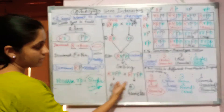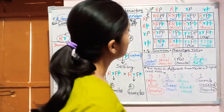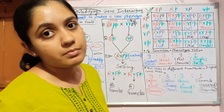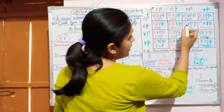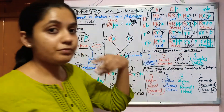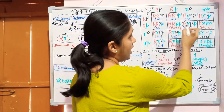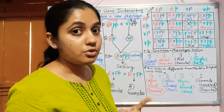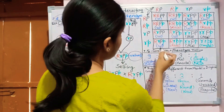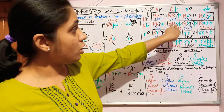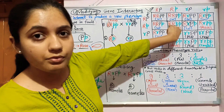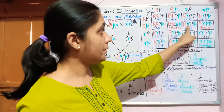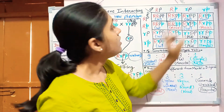Then we do the selfing. After selfing, we form the gametes and the checkerboard. In the checkerboard, four types of combinations are produced. The walnut type comb forms only when both dominant alleles — capital R and capital P from different genes — come into one genotype. If only capital R is present from one parent with two dominant alleles from the same gene, then only rose type comb is produced, no walnut type. When capital R and capital P are both present, then the walnut type comb is present.